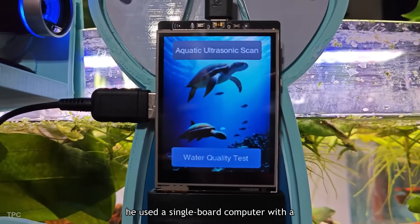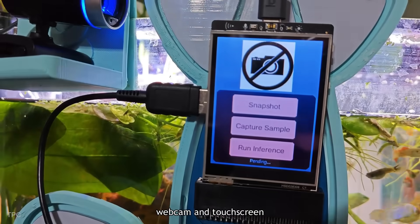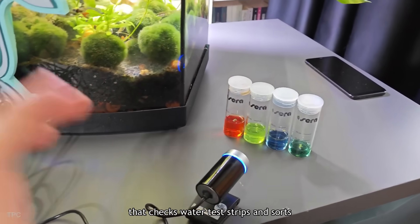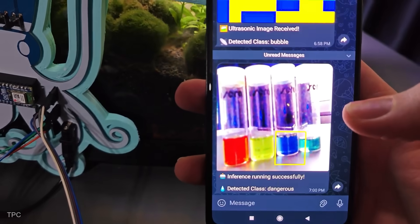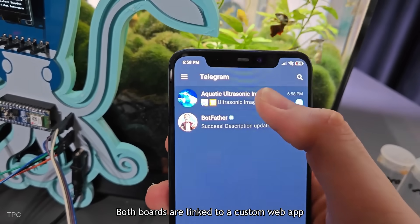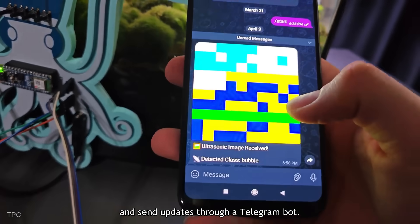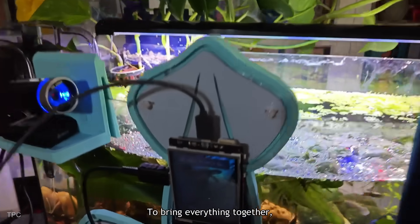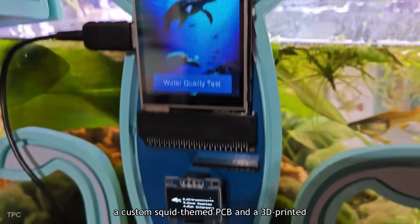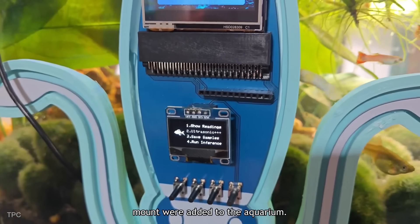For chemical testing, he used a single board computer with a webcam and touchscreen that checks water test strips and sorts them into pollution levels. Both boards are linked to a custom web app and send updates through a Telegram bot. To bring everything together, a custom squid-themed PCB and a 3D-printed mount were added to the aquarium.